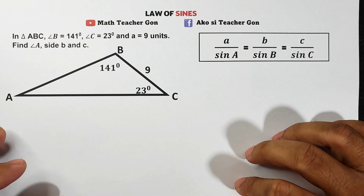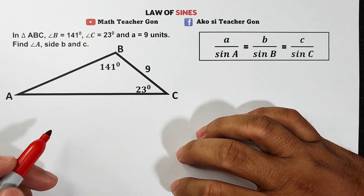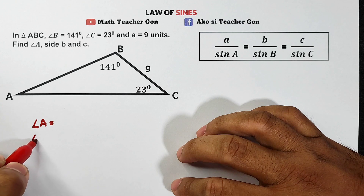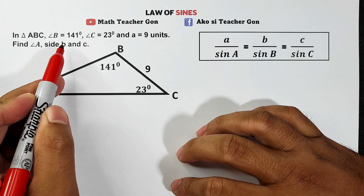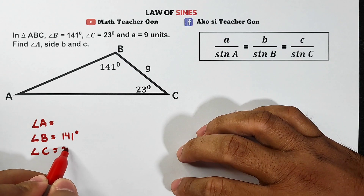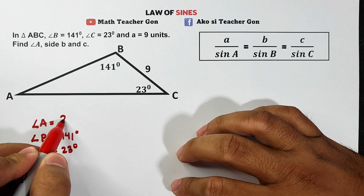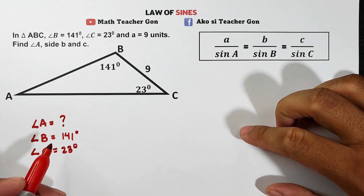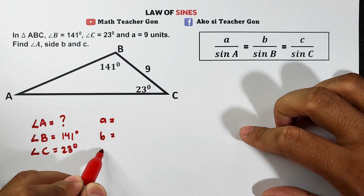First, we will list down all six parts of the triangle. Starting with the angles: angle A, angle B, and angle C. From the given problem, angle B is 141 degrees and angle C is 23 degrees. Angle A is missing, so we put a question mark as a reminder that we need to solve for it. Next, we list the three sides: side a, side b, and side c.